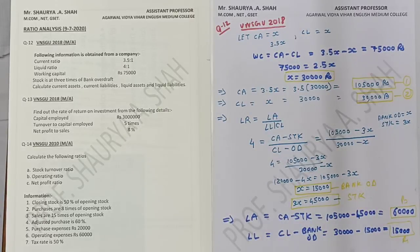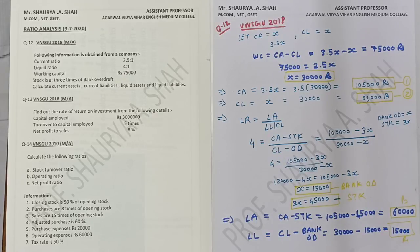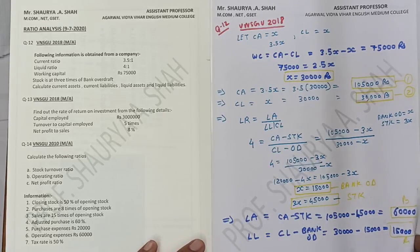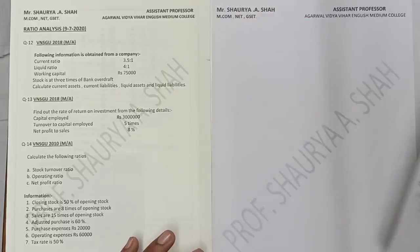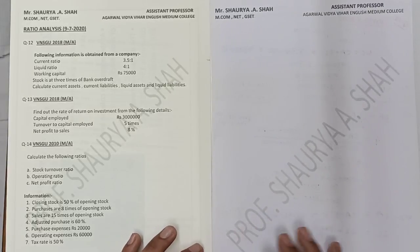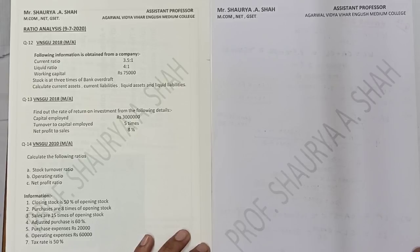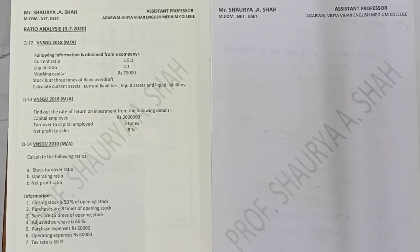Take five seconds to note down the sum if you have not done it yet. Those who have done it, kindly check your sum again. Now moving on to the next sum — question number 13, which is again VNSU 2018, asked two years back in your exam.